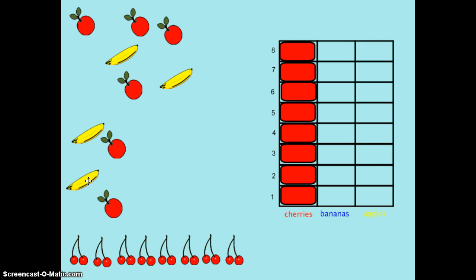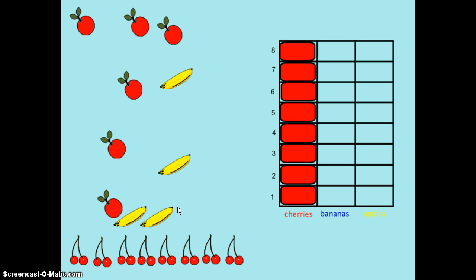Now I'll count bananas. I have one, two, three, four. Four students voted for bananas.